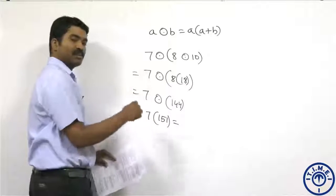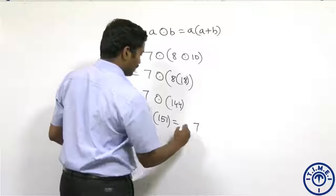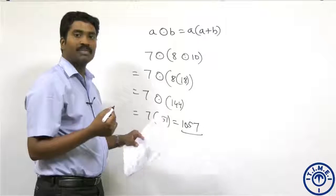7 × 151: 7 × 150 is 1050, plus 7 equals 1057. The answer is 1057.